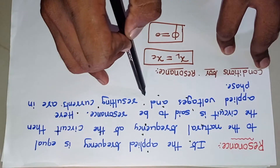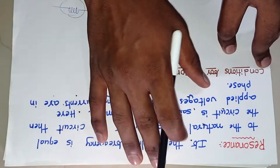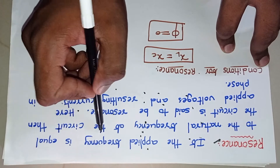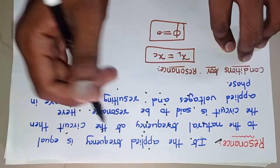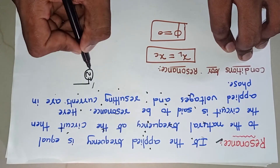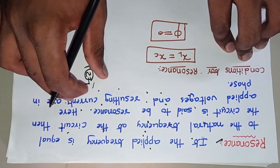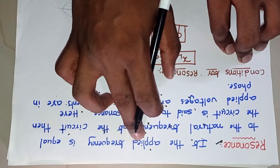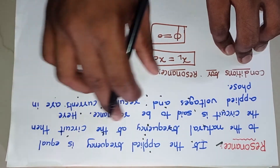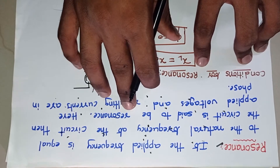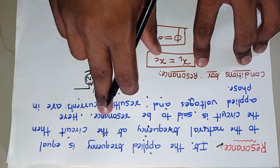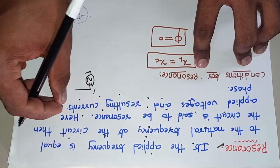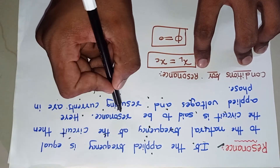Here, applied voltages and resulting currents are in phase. As per the definition, resonance is when the applied frequency is equal to the natural frequency. If in a circuit we apply some current source with some frequency, and that applied frequency equals the natural frequency — which is the transient frequency — then that circuit acts as a resonance circuit. Resonance simply means when we get maximum output.